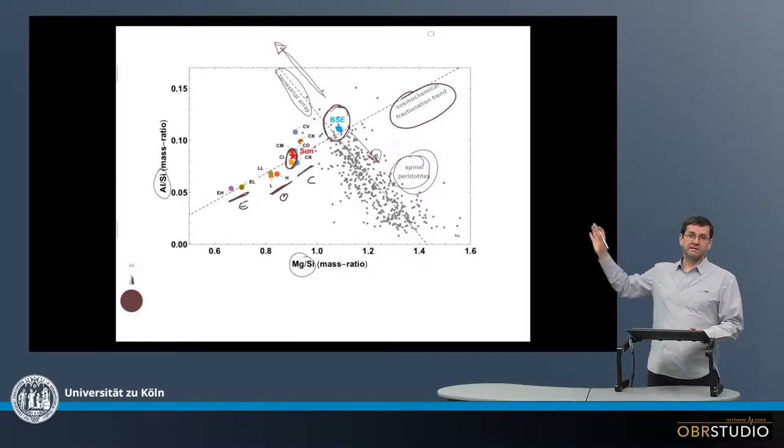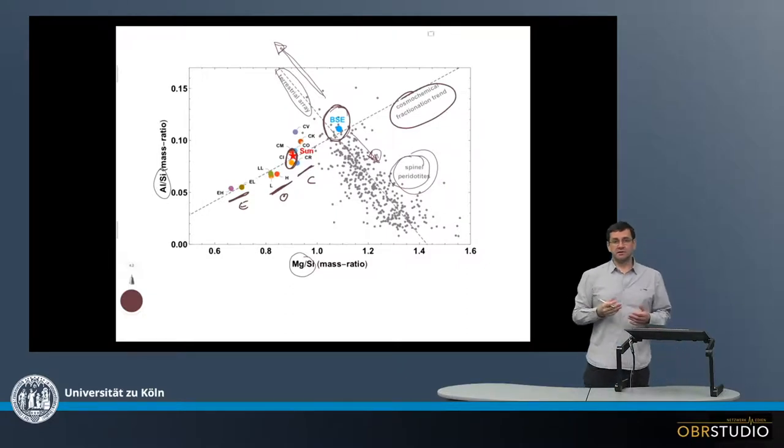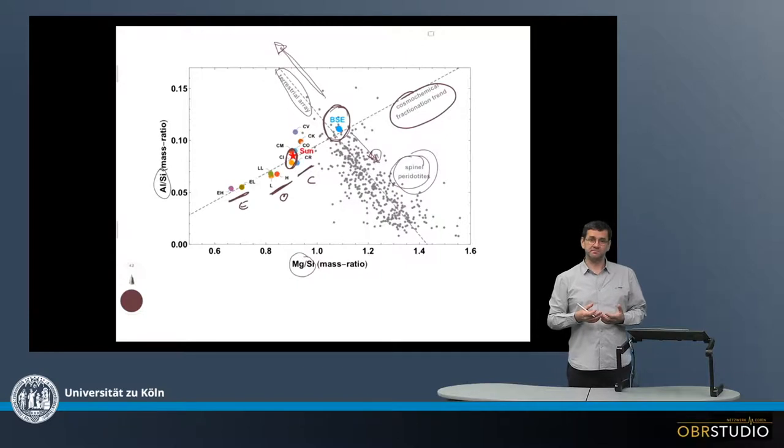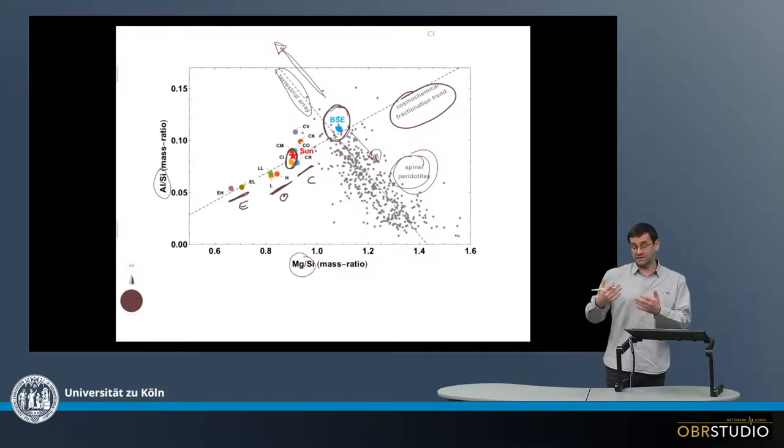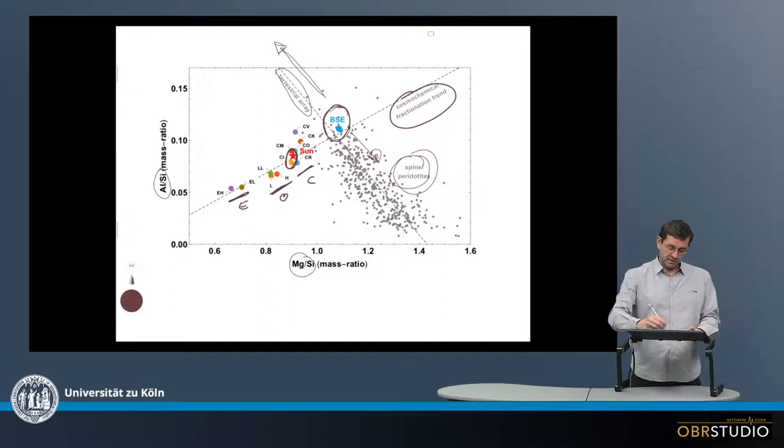And this is why basically this entire line is shifted. So the idea is that, assuming the magnesium-silicon ratio of Earth initially, or that there is this silicon in the core, and this silicon initially was all in bulk silicate Earth. This would move this terrestrial array into this direction.